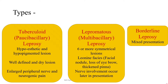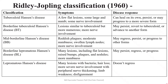Borderline leprosy comes in between tuberculoid and lepromatous and is a mixed presentation — tuberculoid where the host has good immunity and lepromatous where the host has poor immunity. Coming to the detailed Ridley-Jopling classification, which is a histological classification established in 1960.